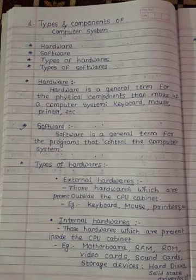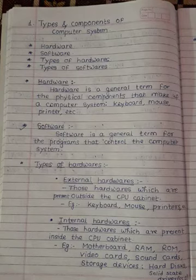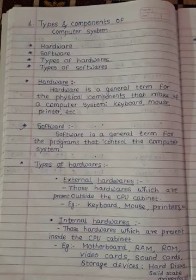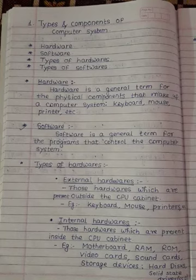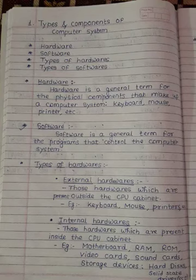Other examples of hardware are CCTV camera, projector, monitor, etc. Now software. Software is a general term for the programs that control the computer system. Software cannot be touched and felt, but it is there inside the computer. It controls the computer system and it is actually a set of programs.